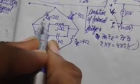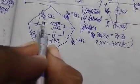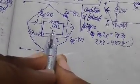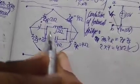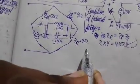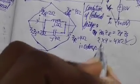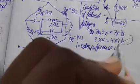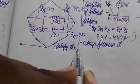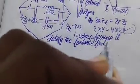Let's assume we have a current I through some load resistance connected at the terminals. Since the balanced bridge condition is satisfied, the current passing through this load impedance is going to be equal to 0 amperes.